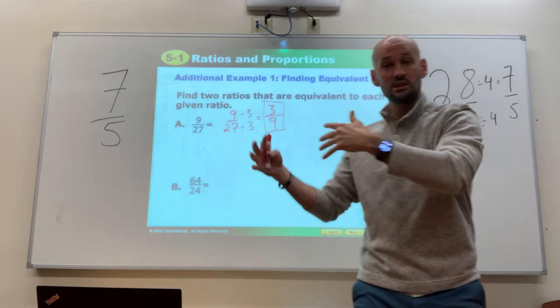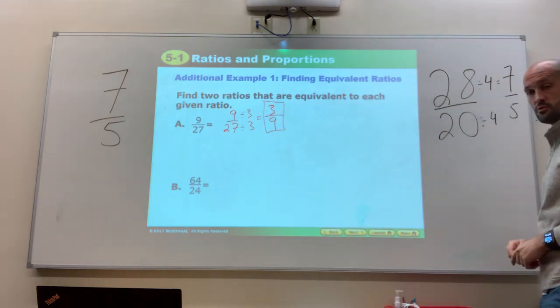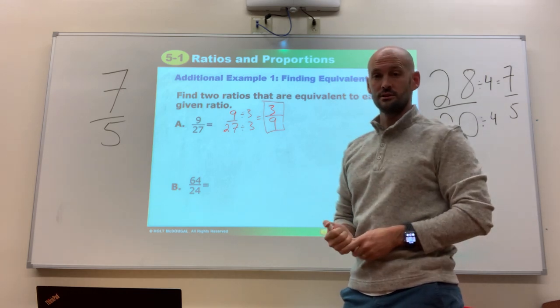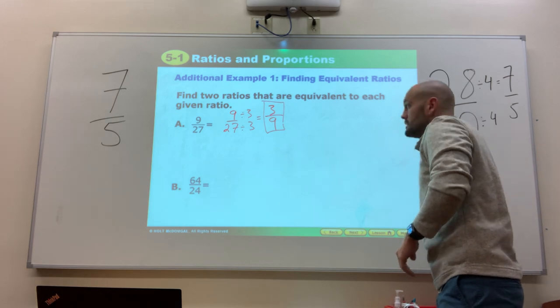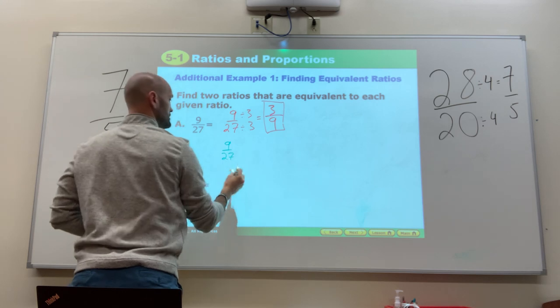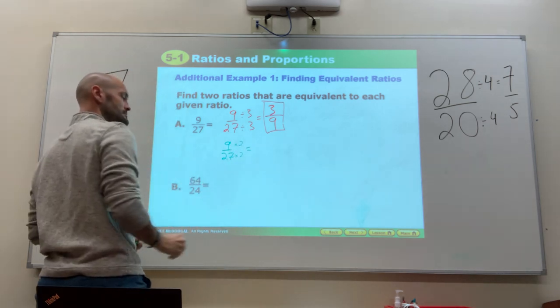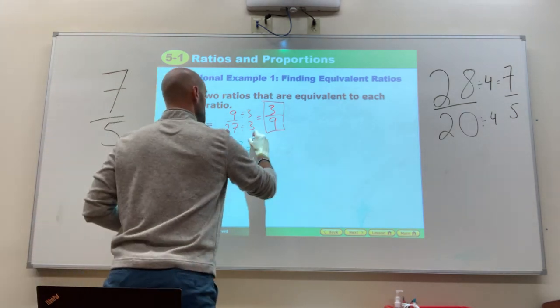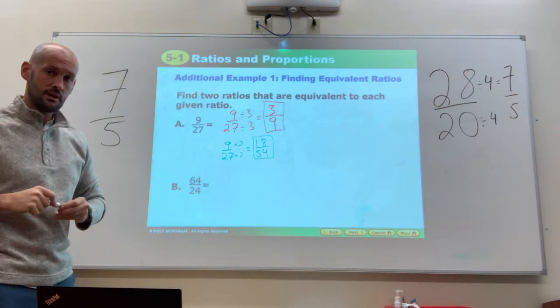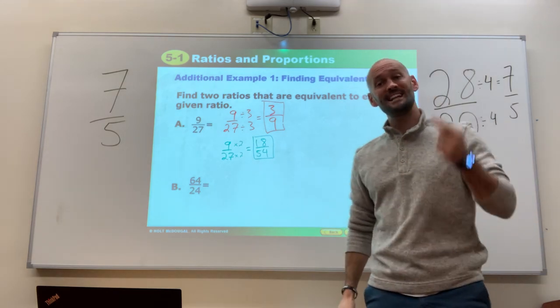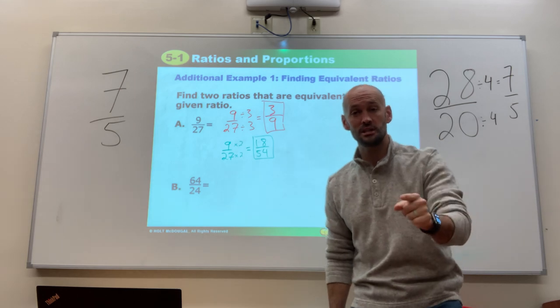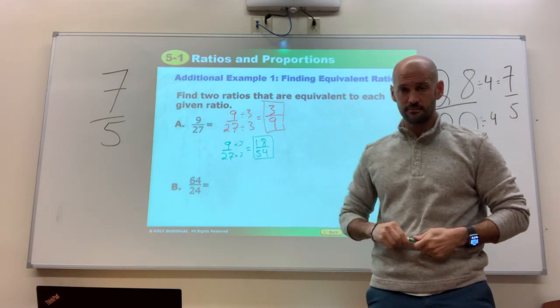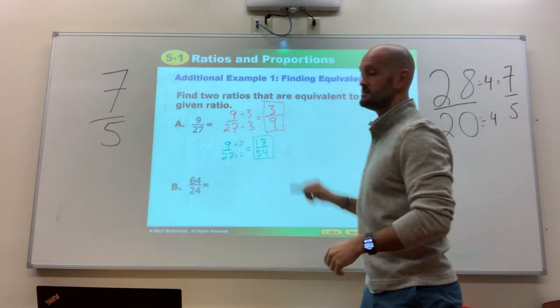Now, I do want to show one other method though. So we've been shrinking them to get them to be equivalent, right? I shrunk down 28 over 20 and I was able to tell if they were equivalent. We shrunk this down to get them to be equivalent. There's another way to get equivalent ratios. Multiply. Make them bigger. So what if I take 9 over 27 and multiply top and bottom by 2? Well, I'll get 18 over 54. That's still an equivalent ratio to 9 over 27. So it's very, a lot of fraction rules apply here, okay? If you want to find an equivalent fraction, I'm sorry, not a fraction, an equivalent ratio, you either have to grow top and bottom by the same number by multiplying or you have to be able to divide top and bottom by the same number, okay? But you want to make sure that you're treating them both the same to get an equivalent ratio, all right?